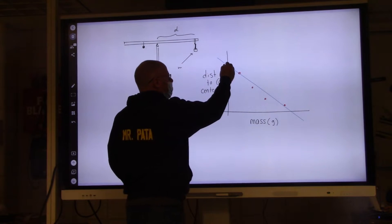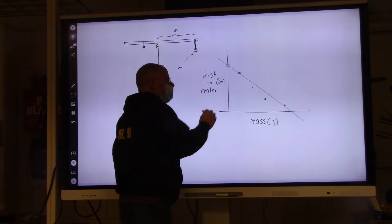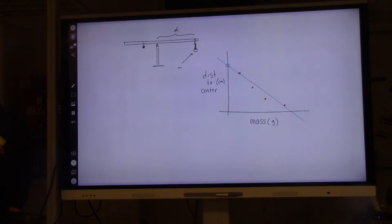Like right here, what would that mean? The mass is zero. The distance is that. Does that make any sense? If your mass is zero, could the thing balance? No.